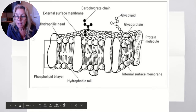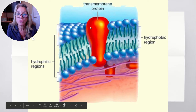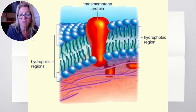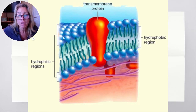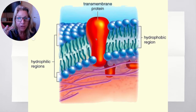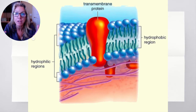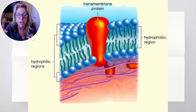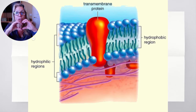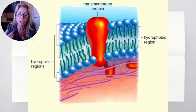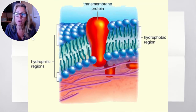This is a transmembrane protein going all the way across. We can see the hydrophobic region of the fatty acids and the hydrophilic region. Proteins are built out of amino acids — there are 20 different amino acids because there are 20 different R groups. Some R groups are hydrophilic — like polar or charged R groups — and some are hydrophobic, like nonpolar groups.